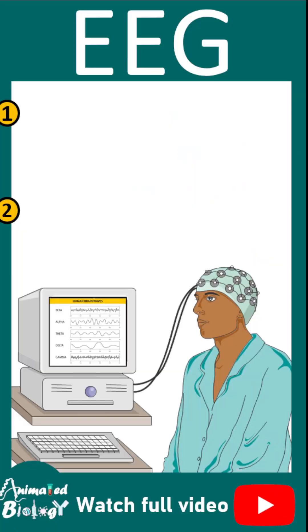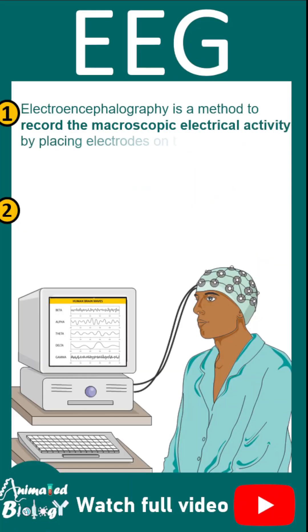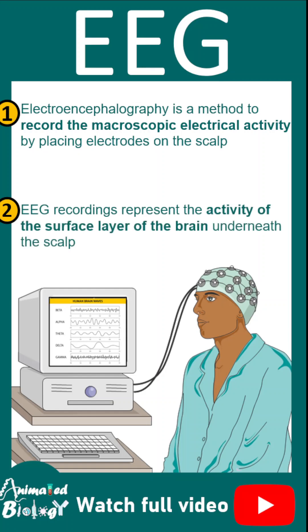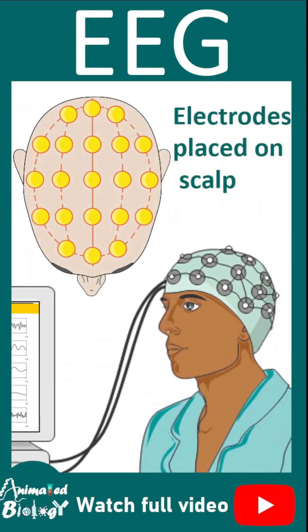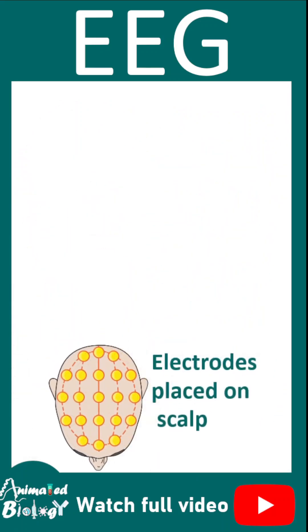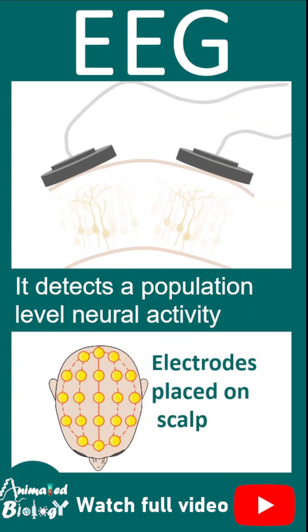EEG is one of the techniques to record macroscopic electrical activity by placing electrodes on the scalp. The EEG recording represents the population-level activity at the surface level of the brain. Here is how the electrodes are placed on the scalp and the macroscopic population-level activity of the neurons are recorded via this kind of method.